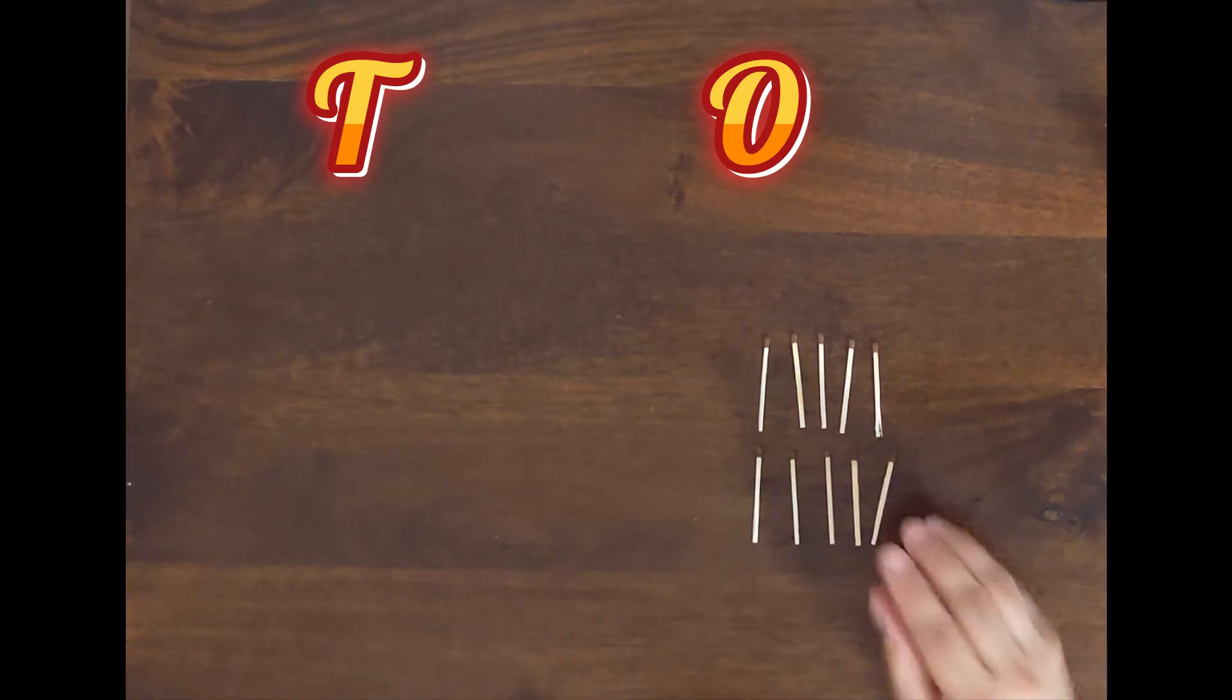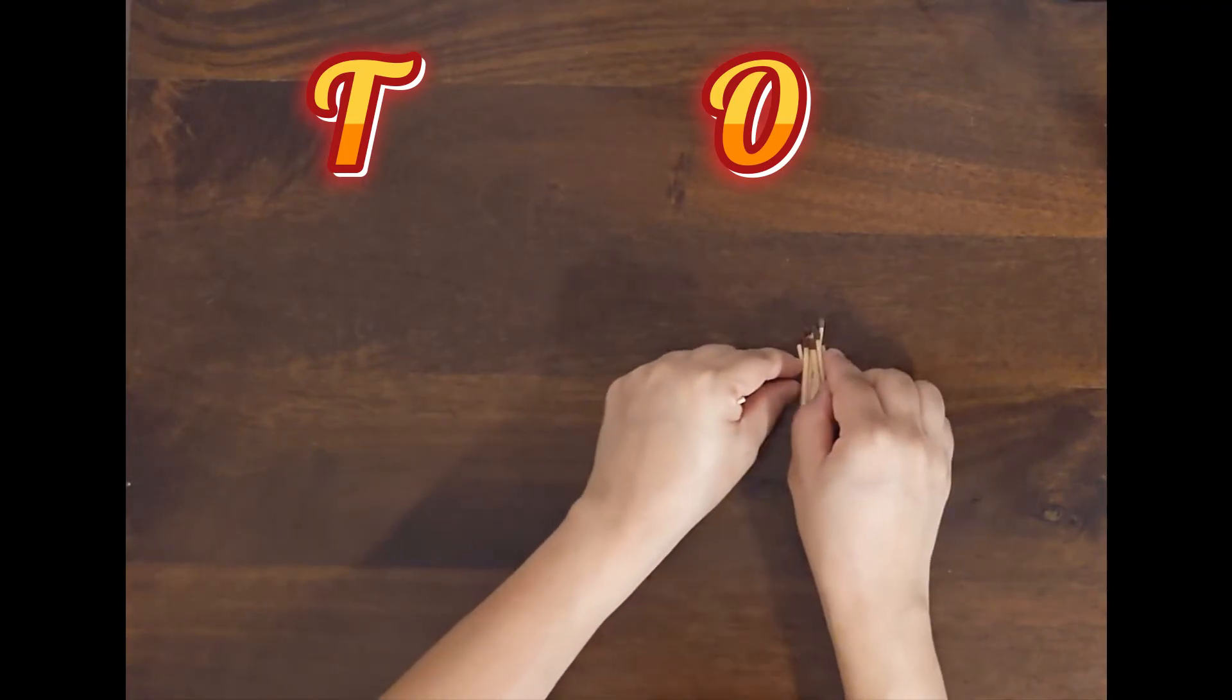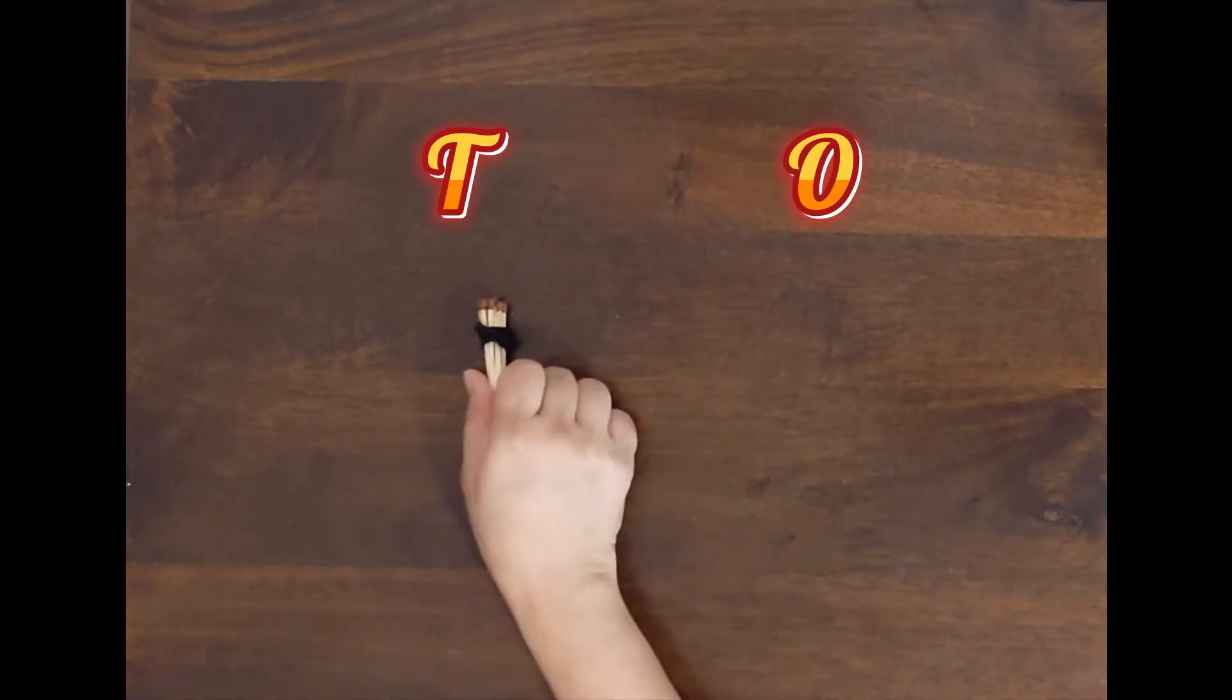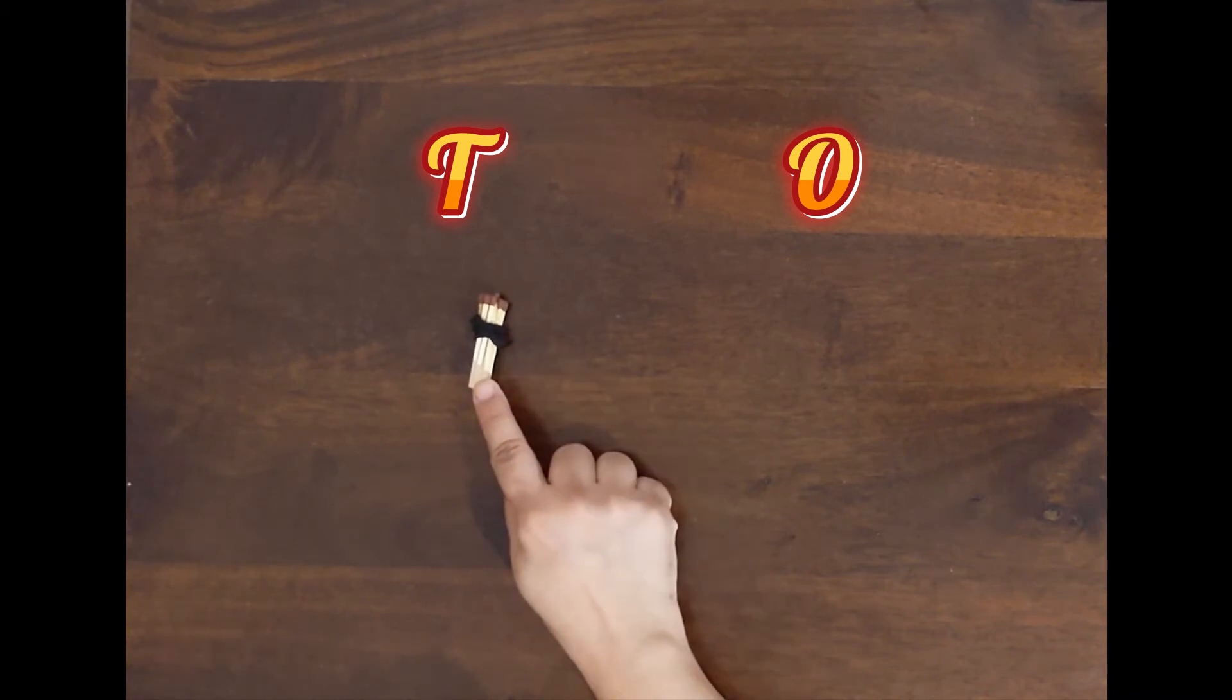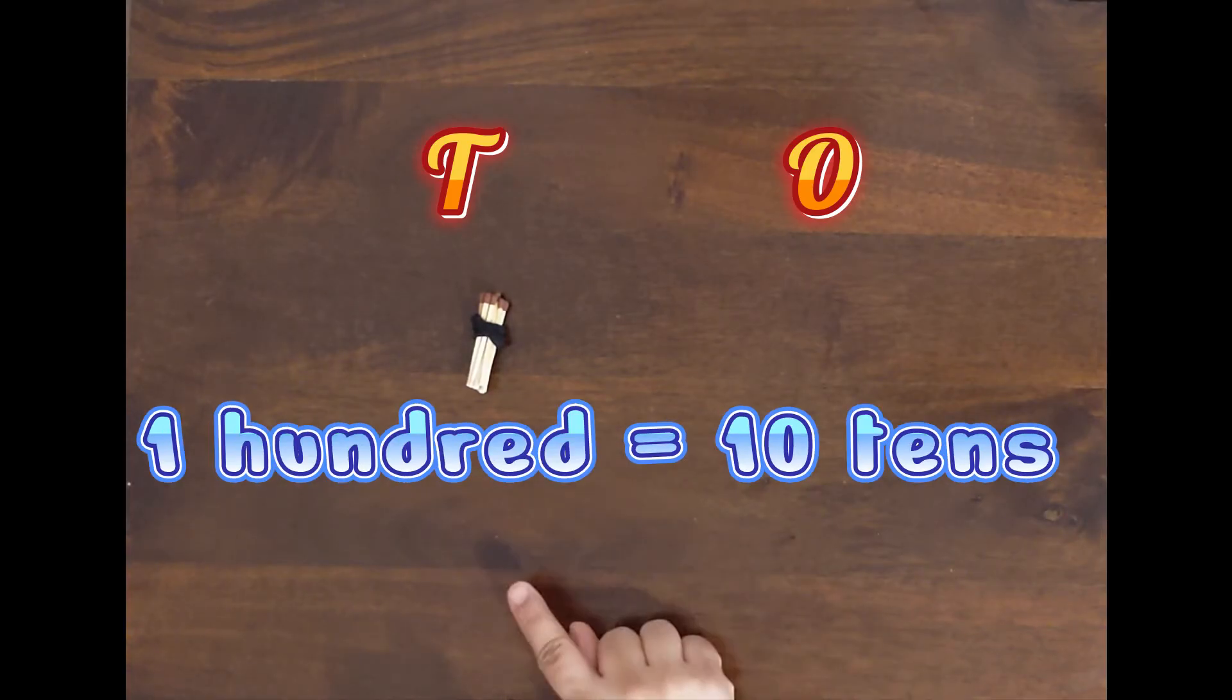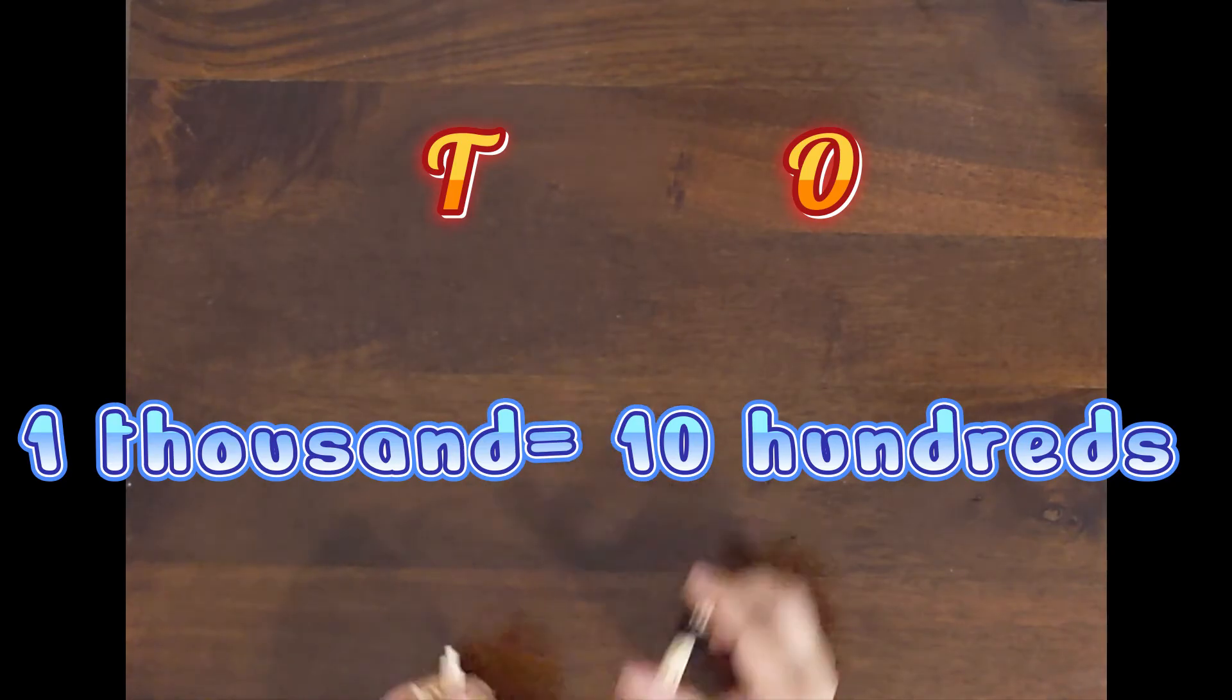And ten ones. Now to make things more easy, we will make a group, a bundle of these ten ones. Now we form the bundle of ten ones. This is one tens. We'll give it a name as one tens. So one tens is having how many ones? Yes, one tens is equal to ten ones. Similarly children, ten tens is equal to one hundred and ten hundred is one thousand.